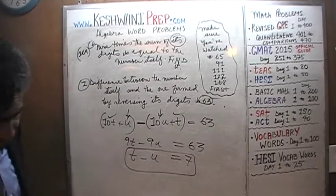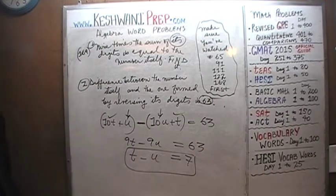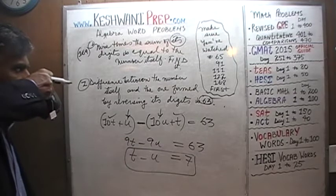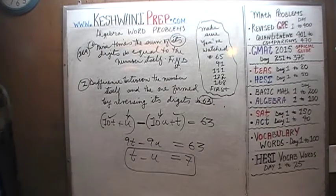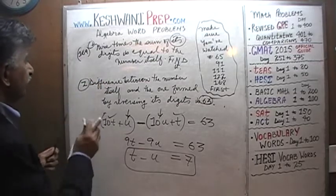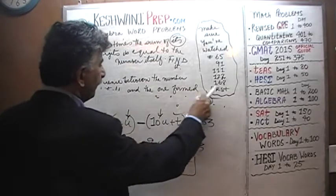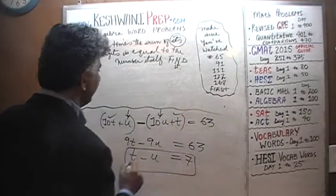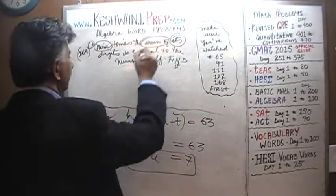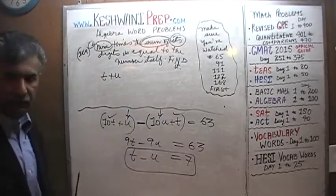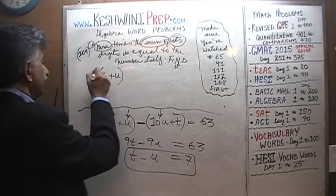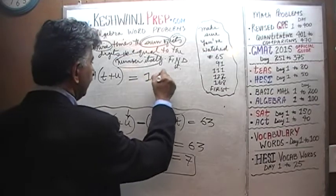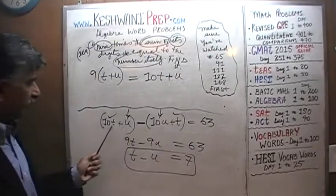Now let's work on the second condition. I need to erase part of the board to make room. Nine times the sum of its digits — the sum of the digits is t plus u. We are told that nine times that amount equals the number itself, which is 10t plus u. So we have: 9 times (t plus u) equals 10t plus u.